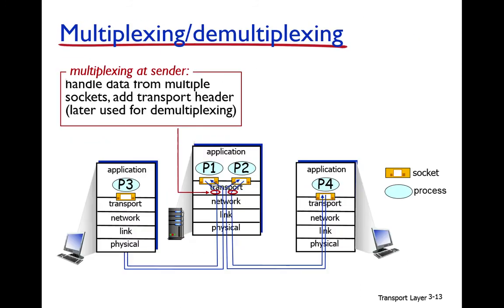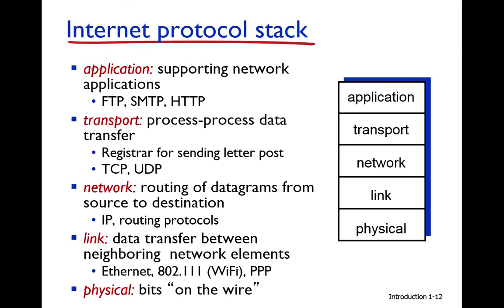The functionalities of each layer — application, transport, network, link, and physical — are now clear. The link layer analogy is like TCS delivering data: on foot from the work campus to Taxila, by motorbike from Taxila to Rawalpindi, and by car from Rawalpindi to Islamic University. The physical layer's function is to convert bits into signals on the sending side and convert signals back to bits on the receiving side.